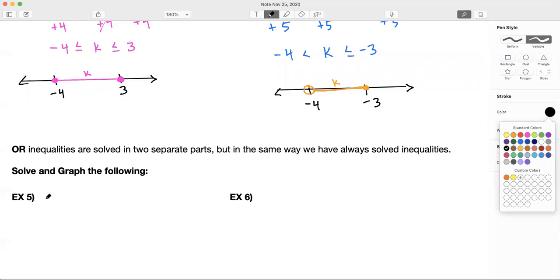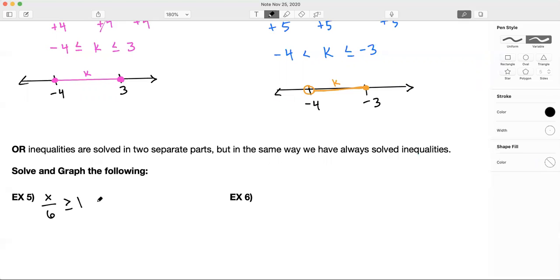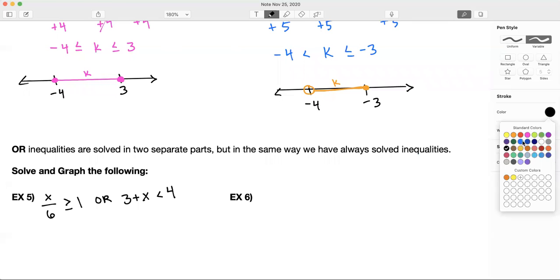Or inequalities look like x divided by six is greater than or equal to one, or - and that's the giveaway - three plus x is less than four. You see an or in there, that means you have an or inequality. So you have two separate things here. All we have to do is solve for the variable in both of them. Then I'll show you how to graph it. Let's solve for the variable in both of them.